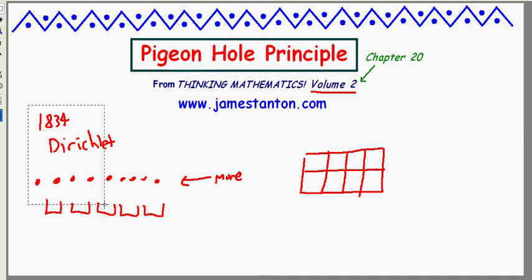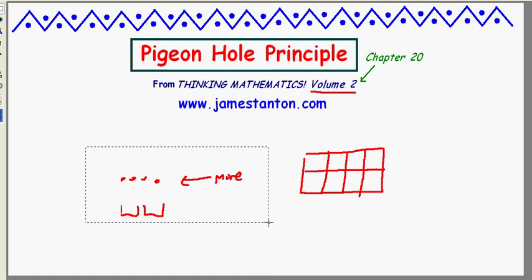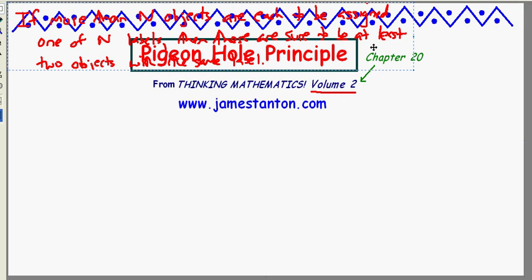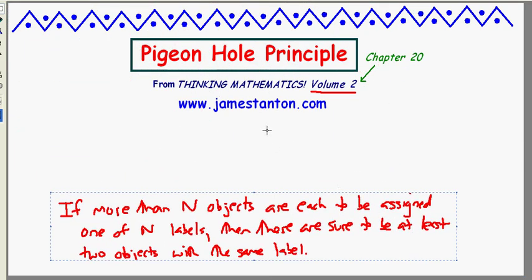Now this principle is very, very powerful, and to express its power, I'm going to actually rephrase this in a different way, and I wrote this beforehand in my terrible handwriting. Here's another way to say the Pigeon Hole Principle. I'm going to do it in terms of labels. Suppose there are more than n objects that are each to be assigned a label, and there's only n labels, so you've got more objects than labels. Well then obviously, whatever you do, there's sure to be at least two objects with the same label.